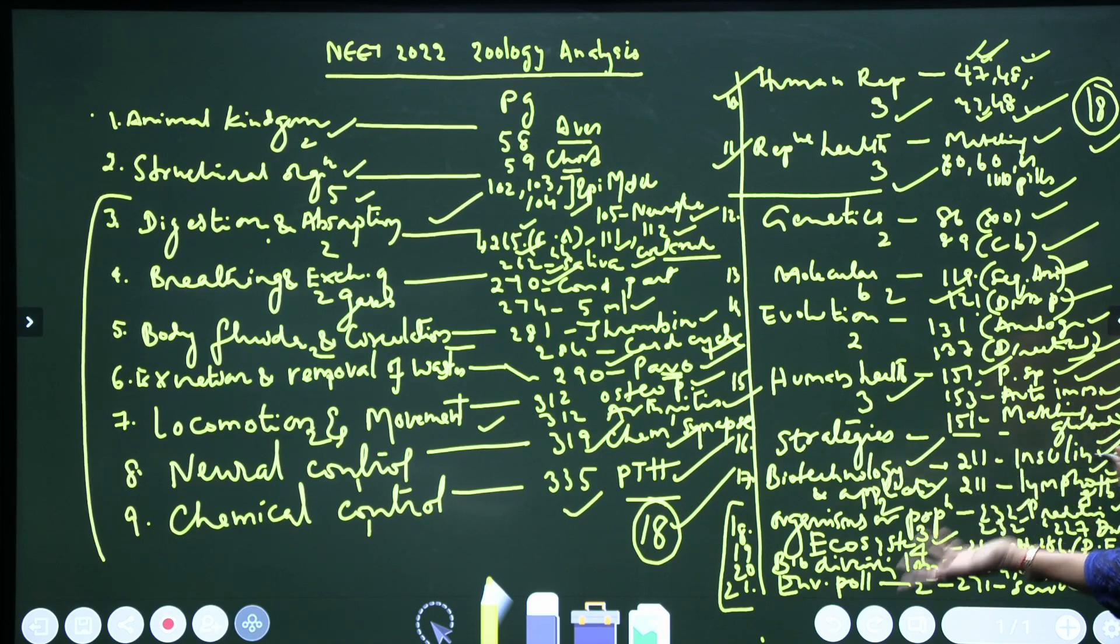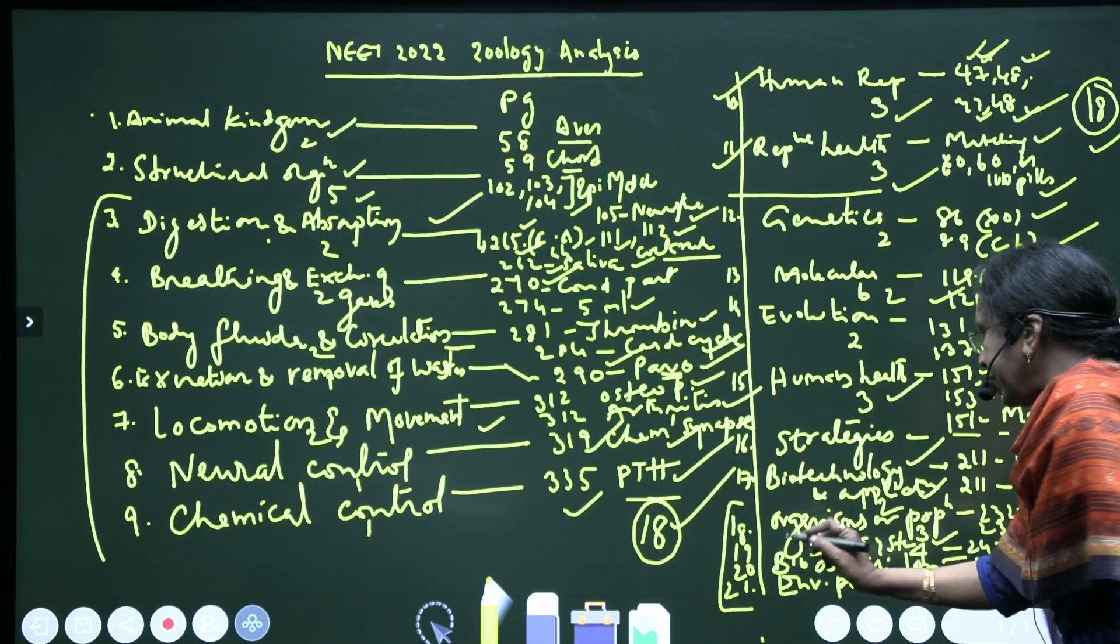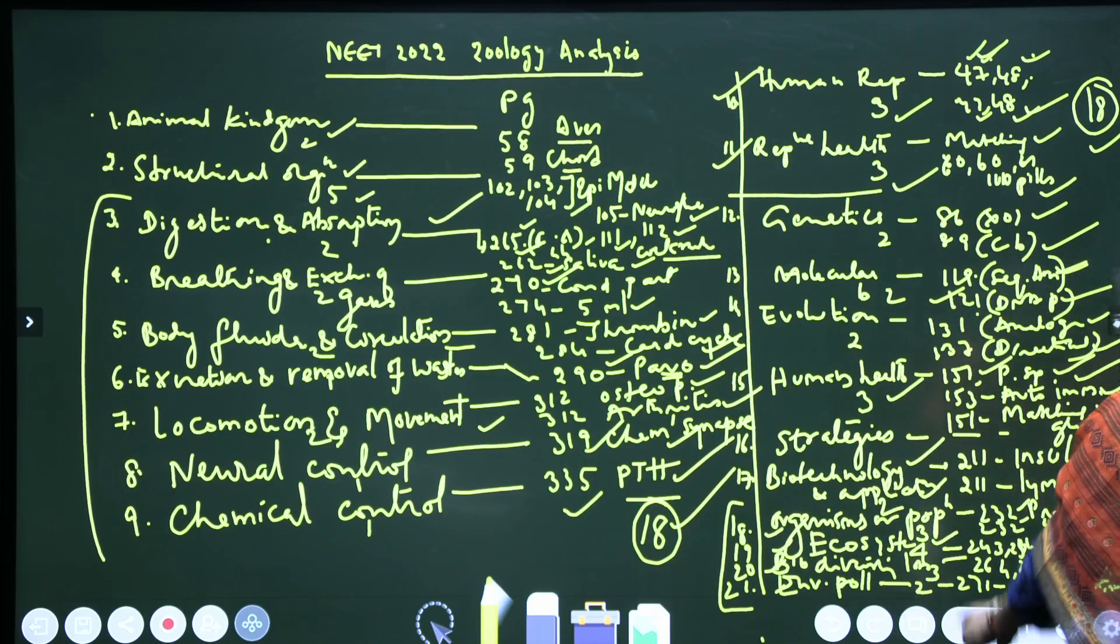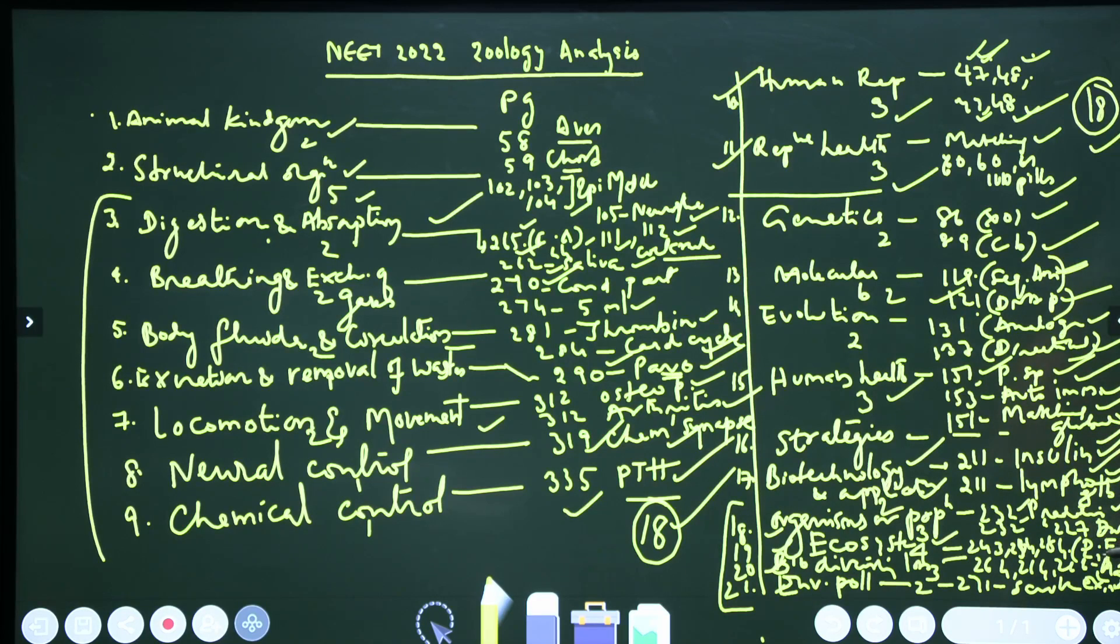Next, coming to Ecology. Ecology: four chapters are there. Organisms and Population - you got three questions where on predation they ask two questions, also from page 232. Both questions are from predation, same page. And page 227, again one more question is given.